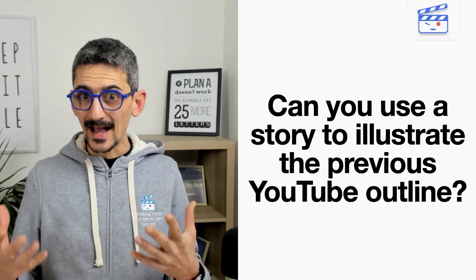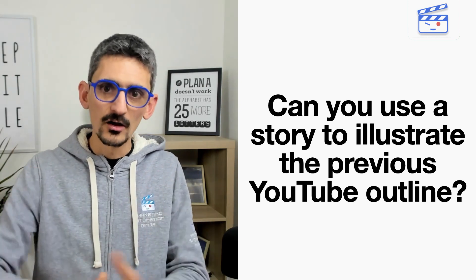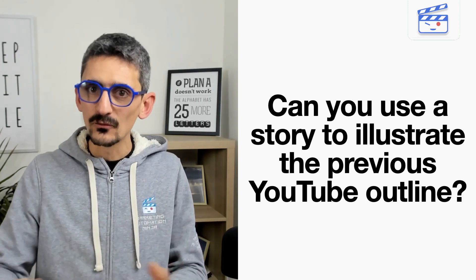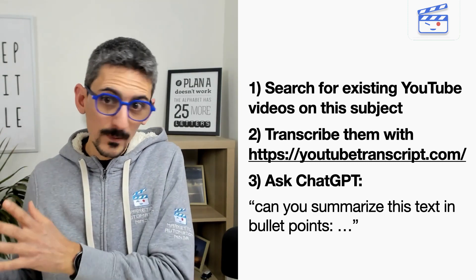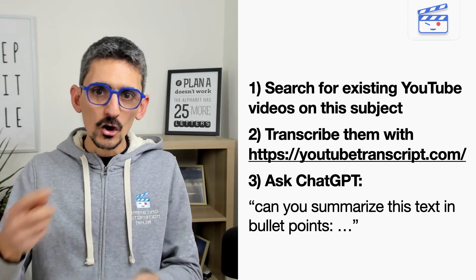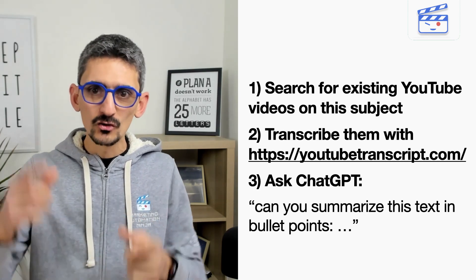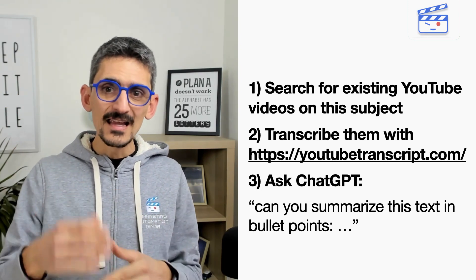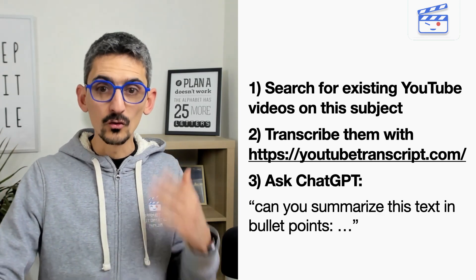Next, we can ask him to use a story to illustrate a previous point. For example: can you use a story to illustrate the point in the previous outline? If he already wrote an outline, that works great. We can also search for competitors on YouTube, finding videos that talk about the same thing, use the platform YouTubeTranscripts.com to extract the text, and then ask ChatGPT to summarize another video to see if other YouTubers had ideas that we might have missed.